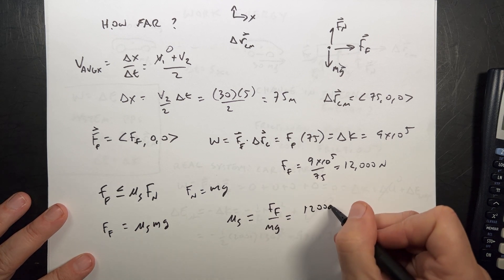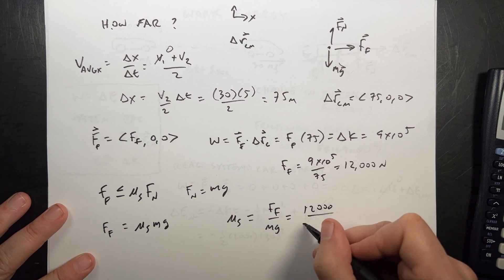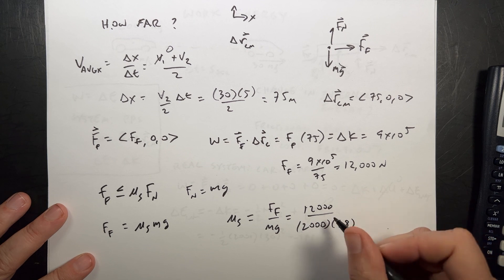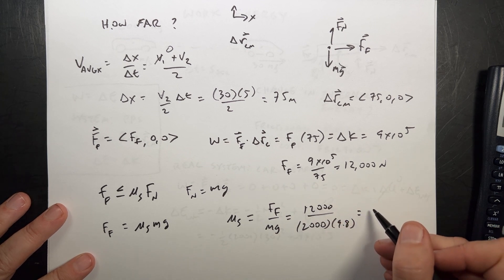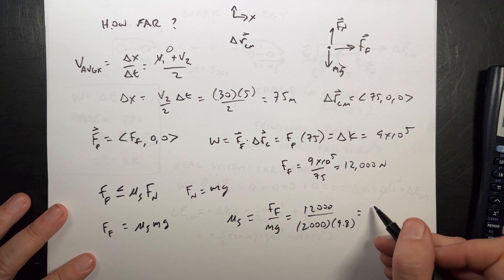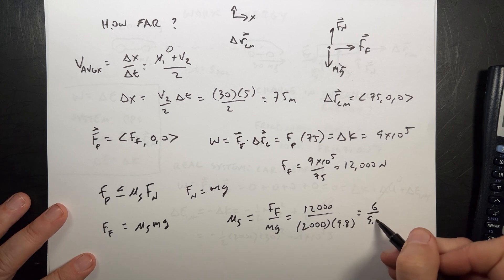So that's going to be 12,000 divided by 2,000 times 9.8. And so 12,000 divided by 2,000 is 6. Right? It's 6. 6 over 9.8.